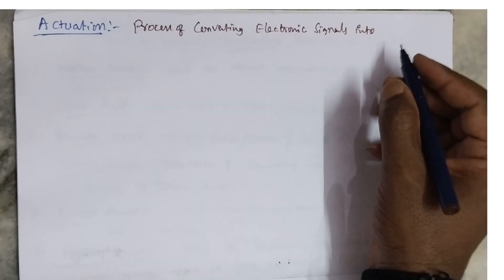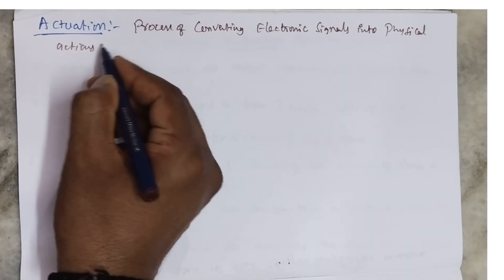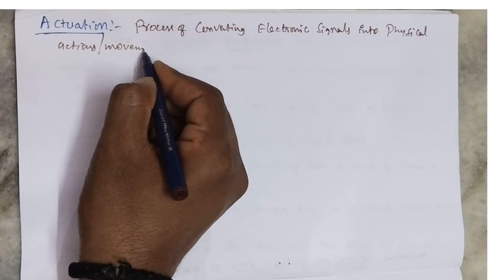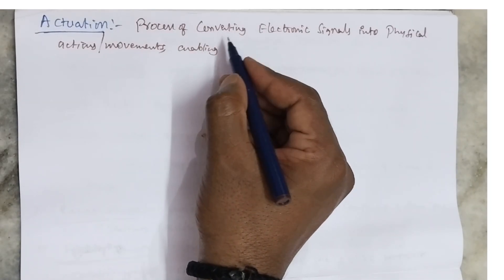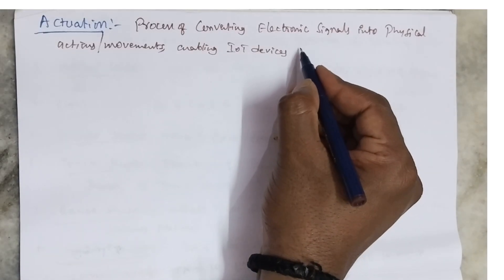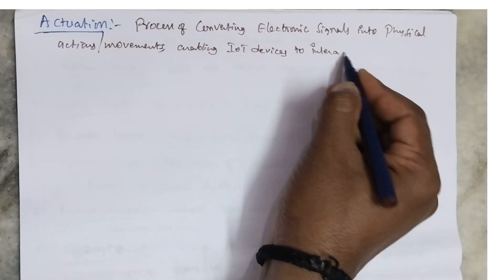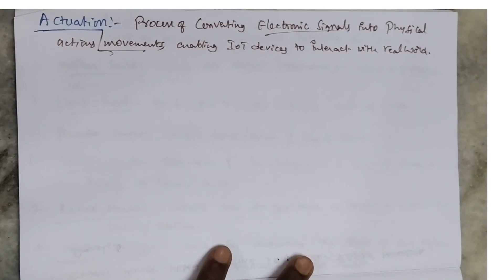Activation is the process of converting electronic signals into physical actions or movements, enabling IoT devices to interact with the real world. In simple terms, the process of converting electronic signals into physical movements is called activation.